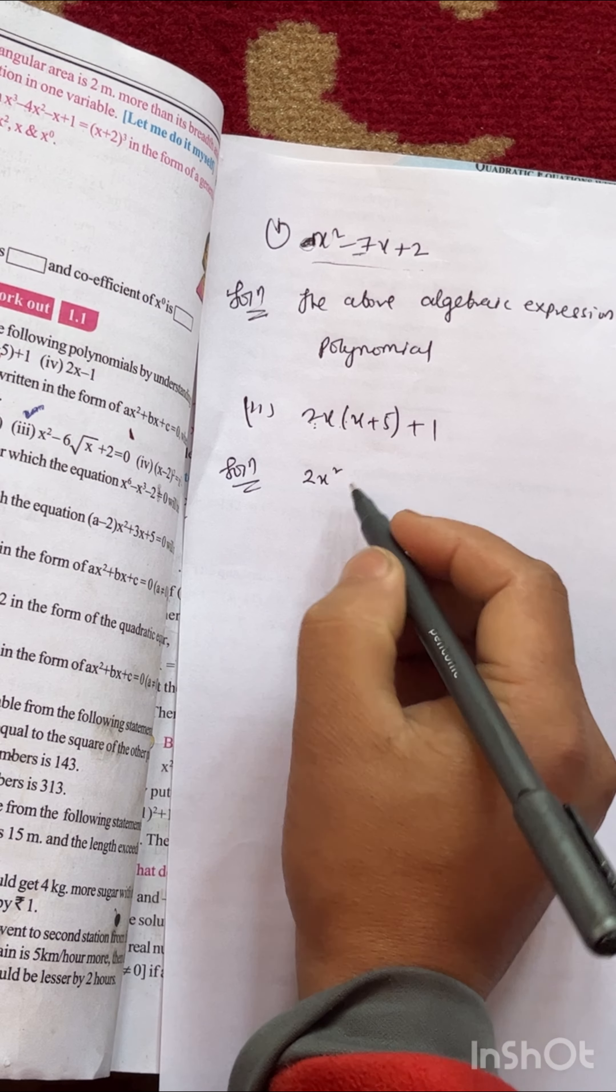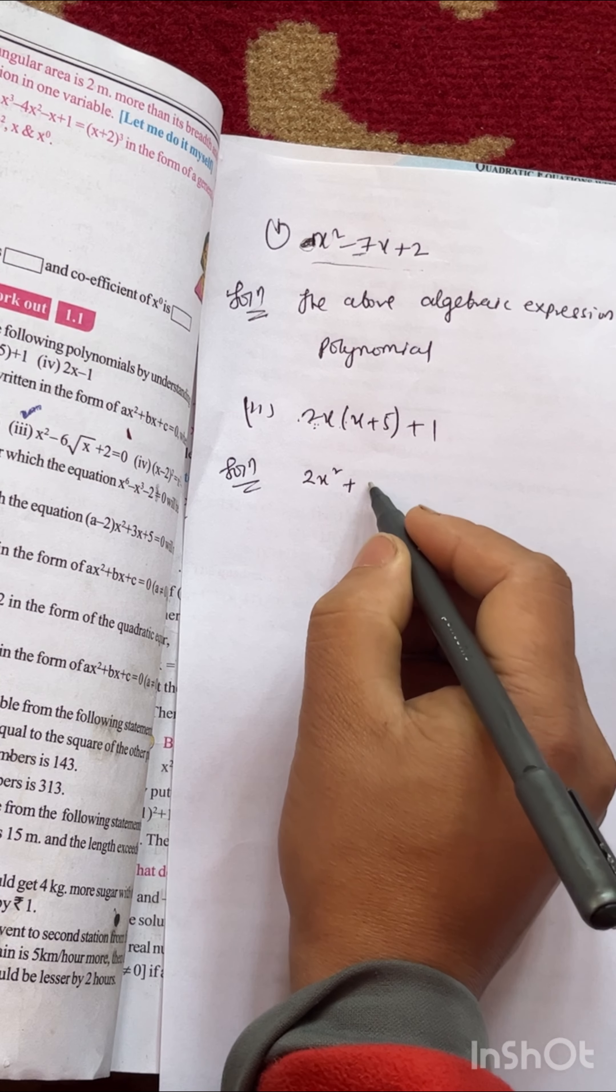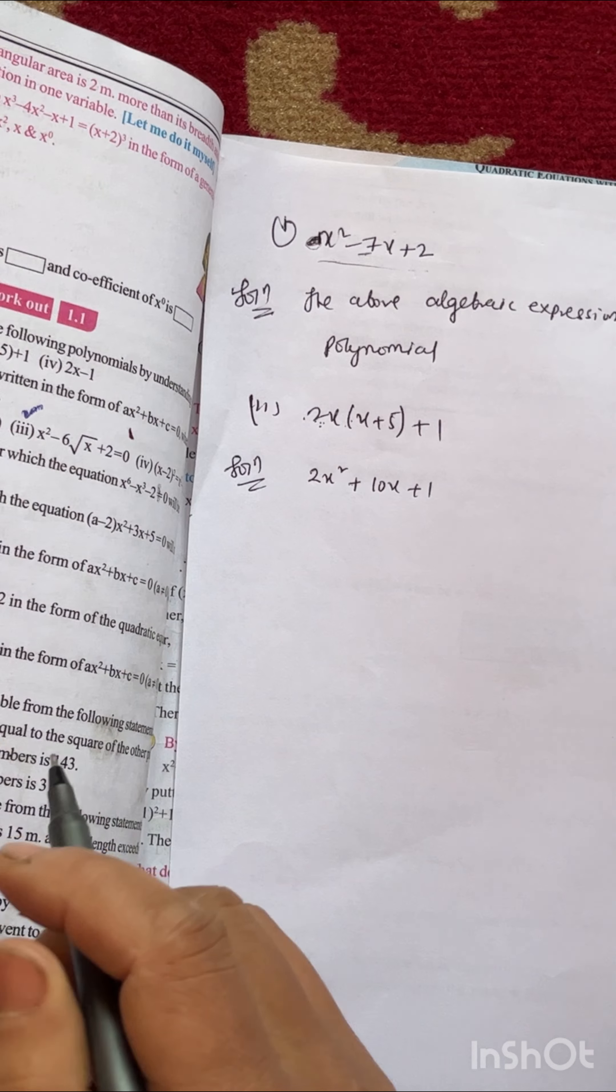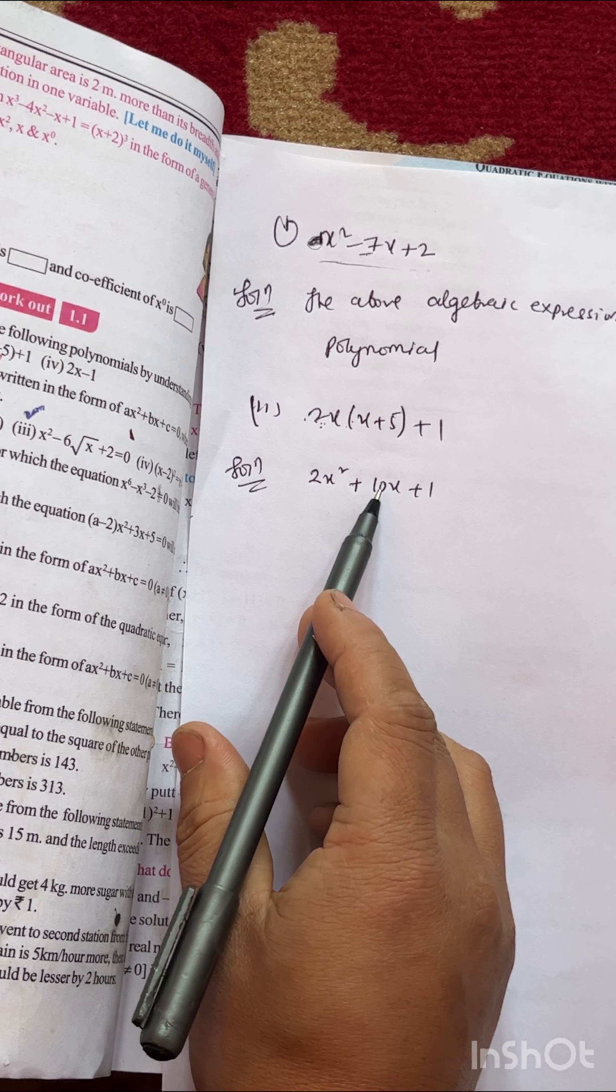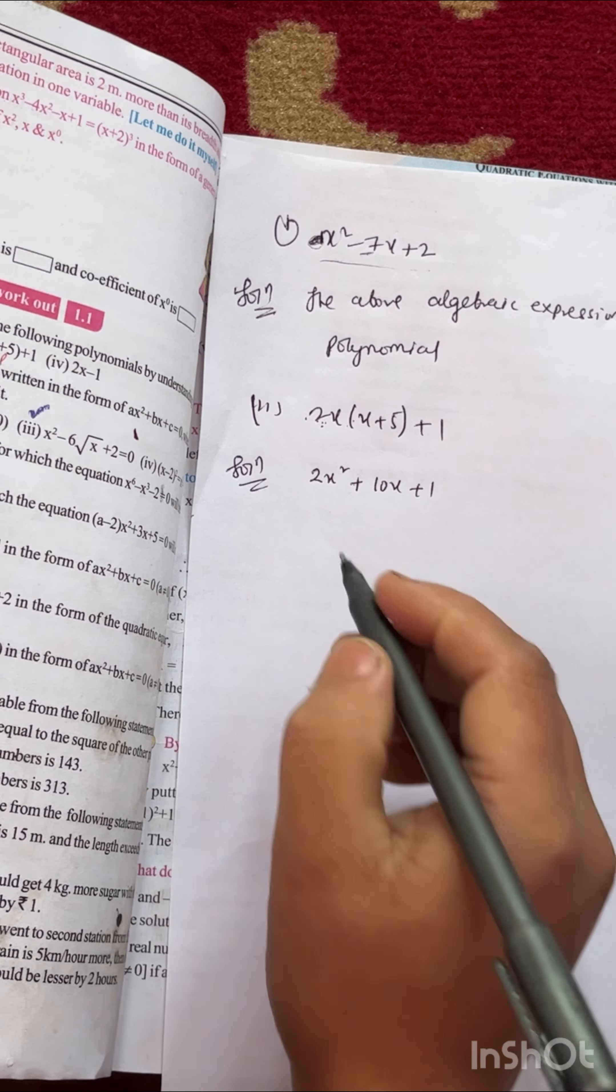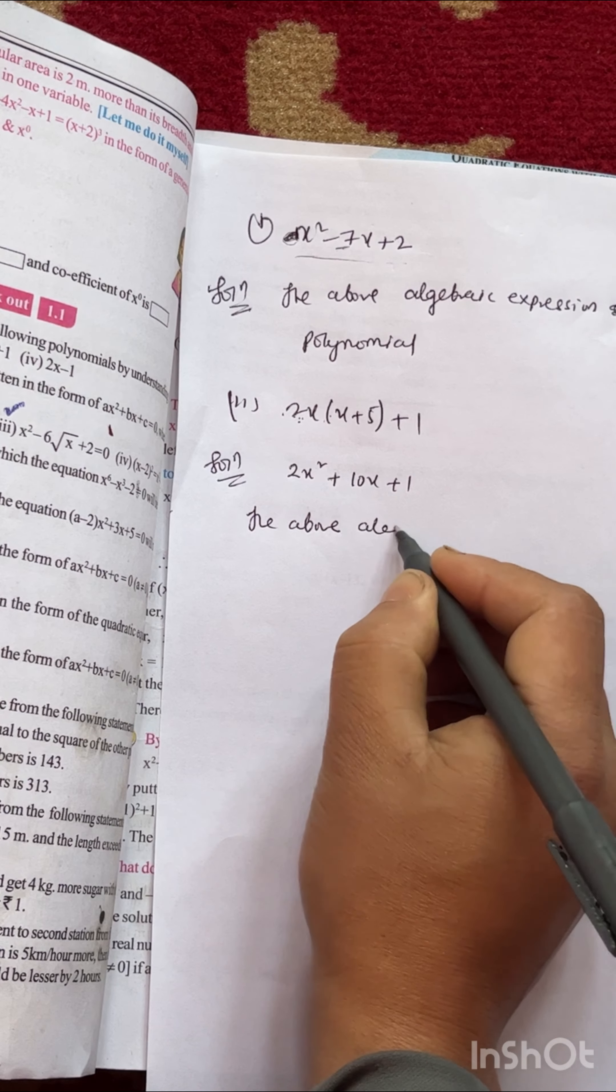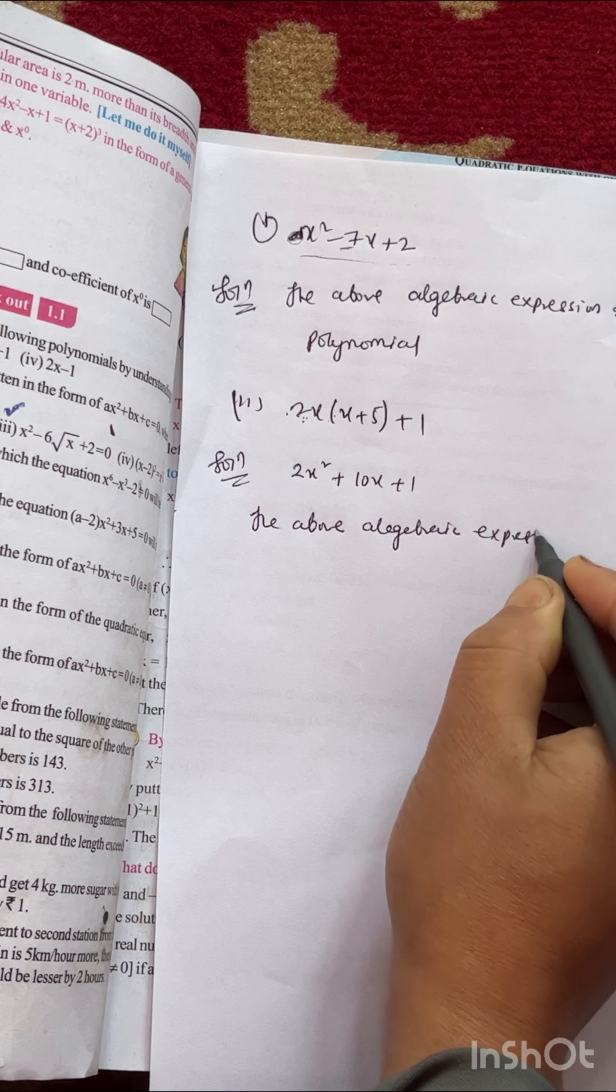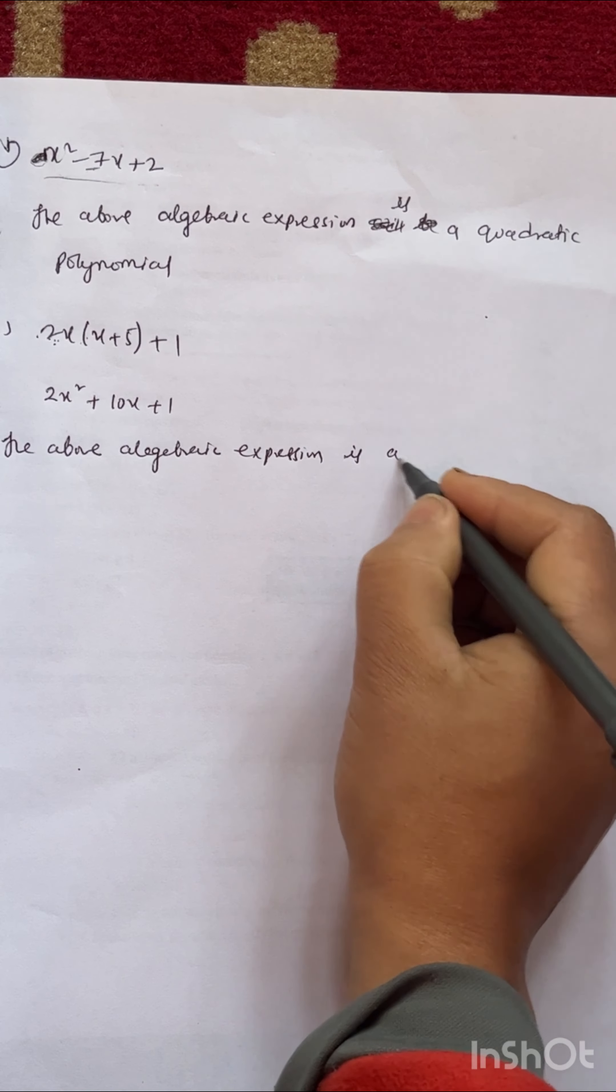Multiply 2x by x to get 2x², and 2x by 5 to get 10x, plus 1. So this is 2x² + 10x + 1. This is also a quadratic polynomial. In place of a there is 2, in place of b there is 10, and in place of c we have 1. So we can write the above algebraic expression is quadratic.